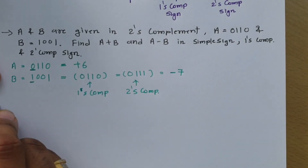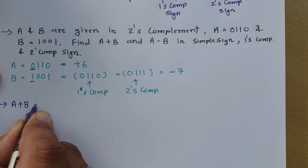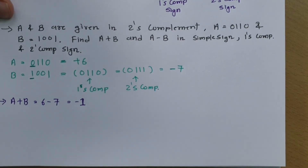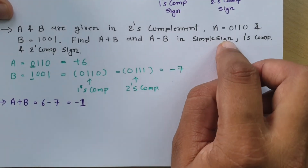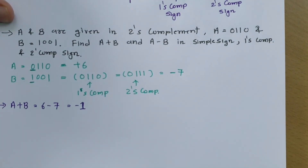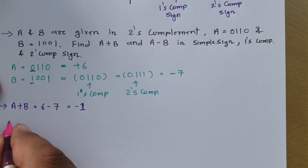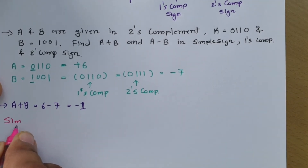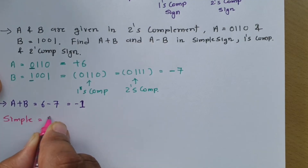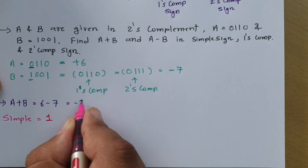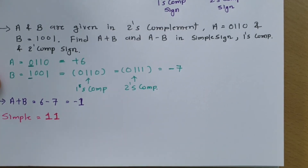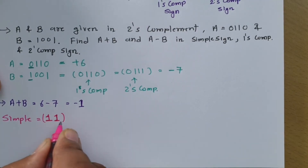Now let us calculate A plus B. A plus B equals 6 plus (minus 7), which is minus 1. We need to represent minus 1 in simple sign representation, one's complement, and two's complement. In simple sign representation, the negative sign gives a leading 1, and the value 1 is represented as 1. So the answer is 11 in simple sign representation.